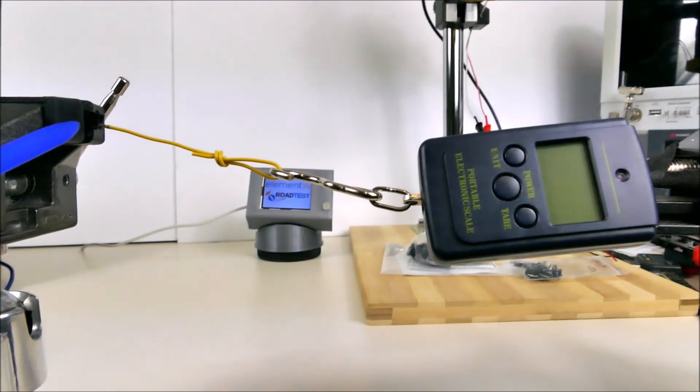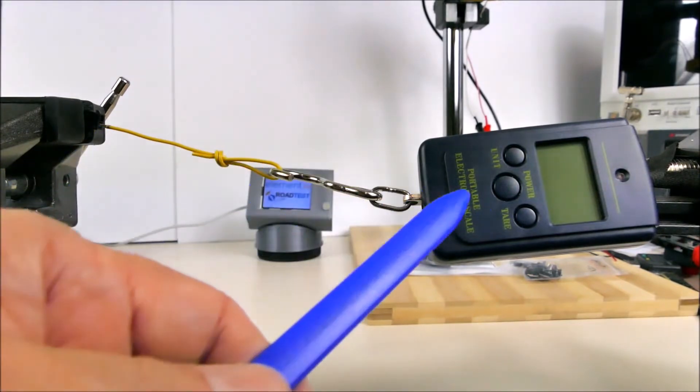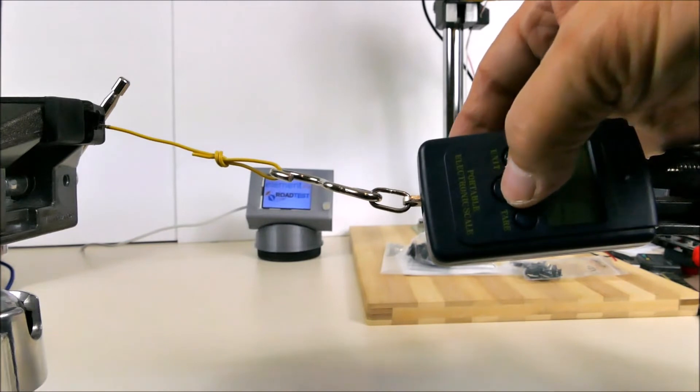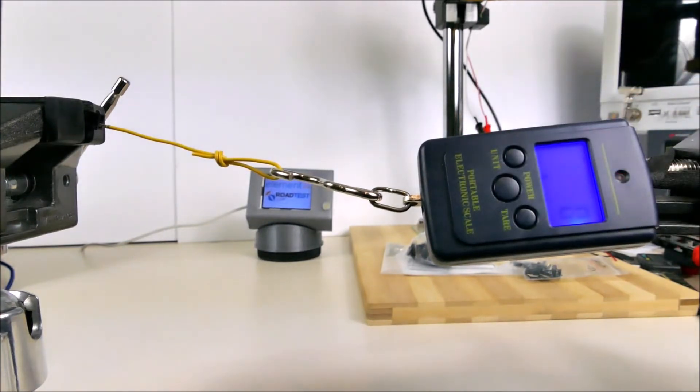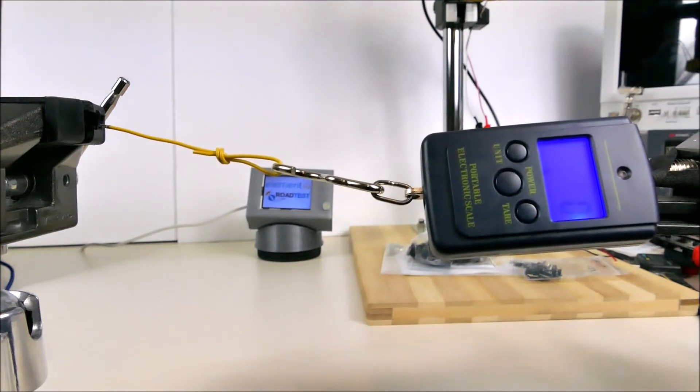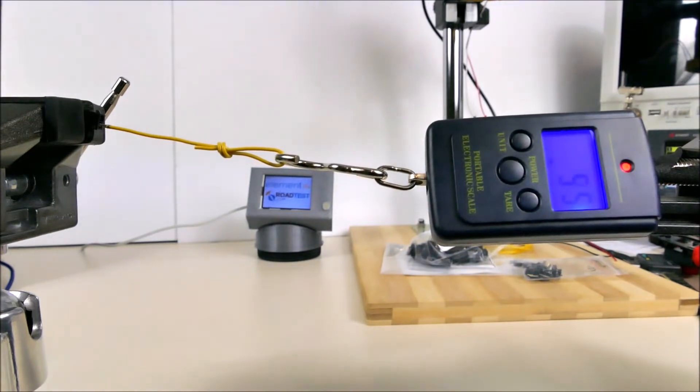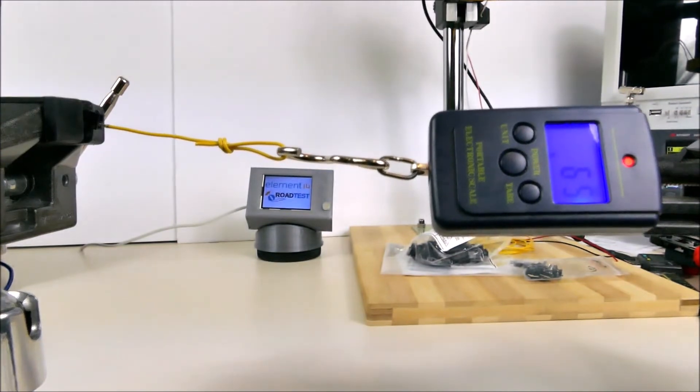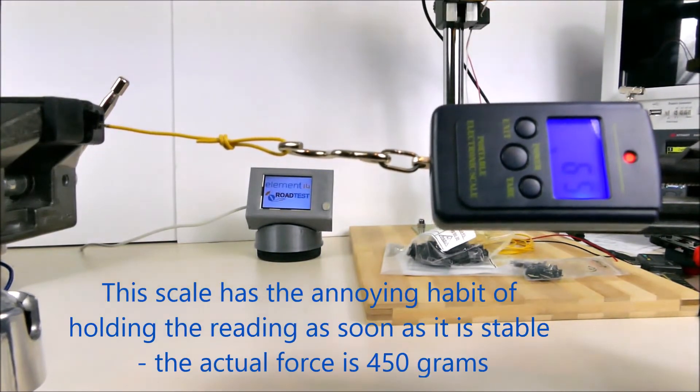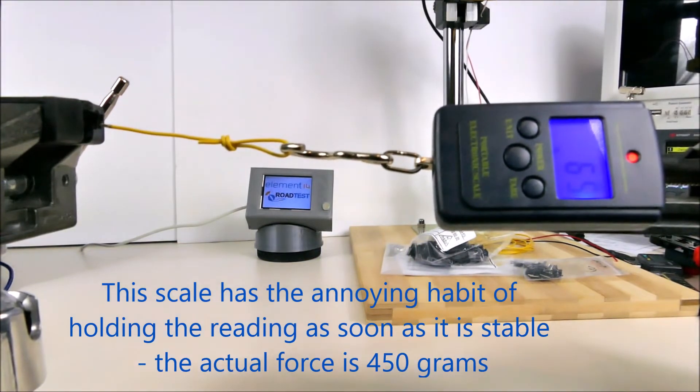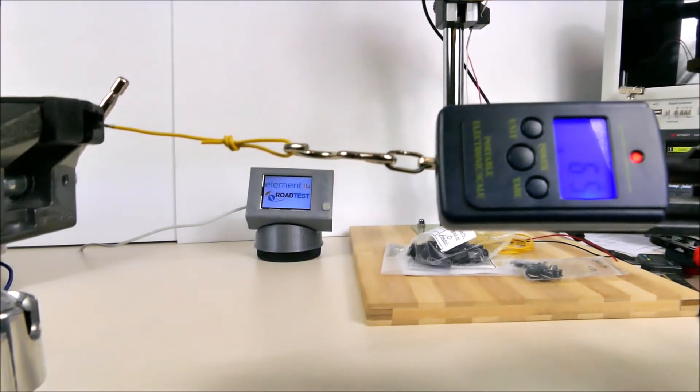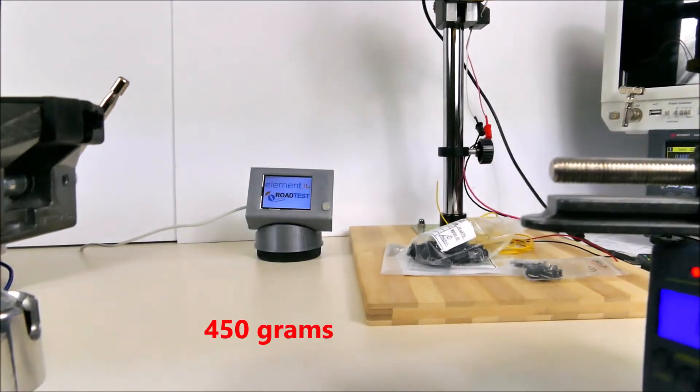Next up, some pull tests. Connector in the vise here and connected to it is a single connector, and we're just going to measure the pull force with this meter over here. I've got it connected to a vise which I can pull, and we can see that it's at 45, 55 grams, 65, and it's coming out. So it's about 65 grams to pull out on a single connector.